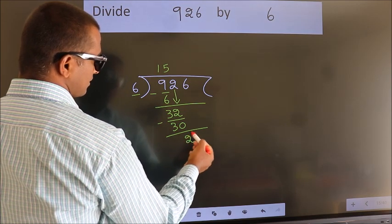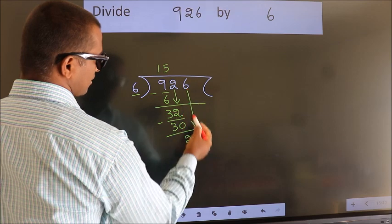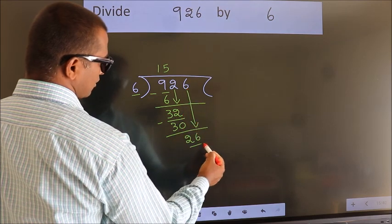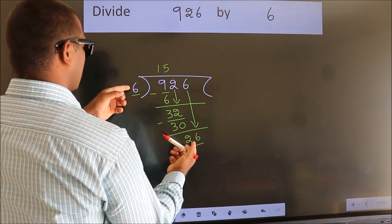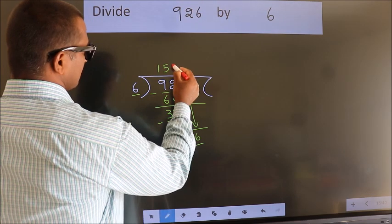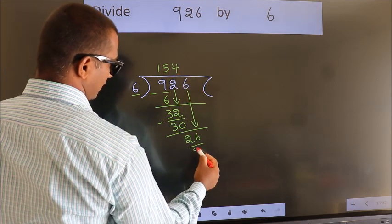After this, bring down the beside number. So, 6 down. So, 26. A number close to 26 in 6 table is 6 fives 24.